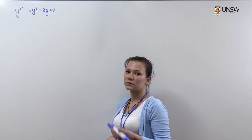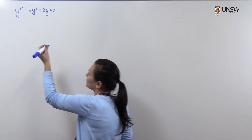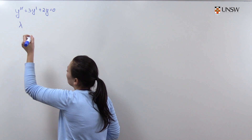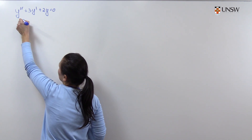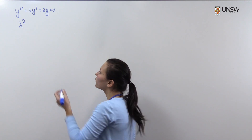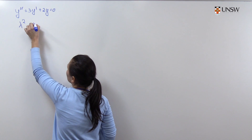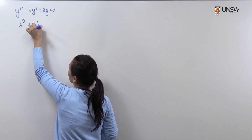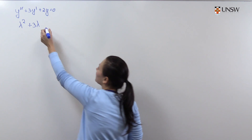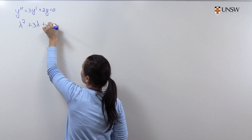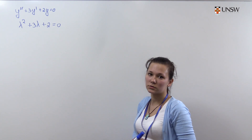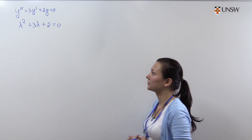The characteristic equation for this differential equation will be lambda squared, because of the second derivative of y, plus 3 lambda, because of the first derivative of y, plus 2 equals 0. We need to find the roots of this quadratic equation.